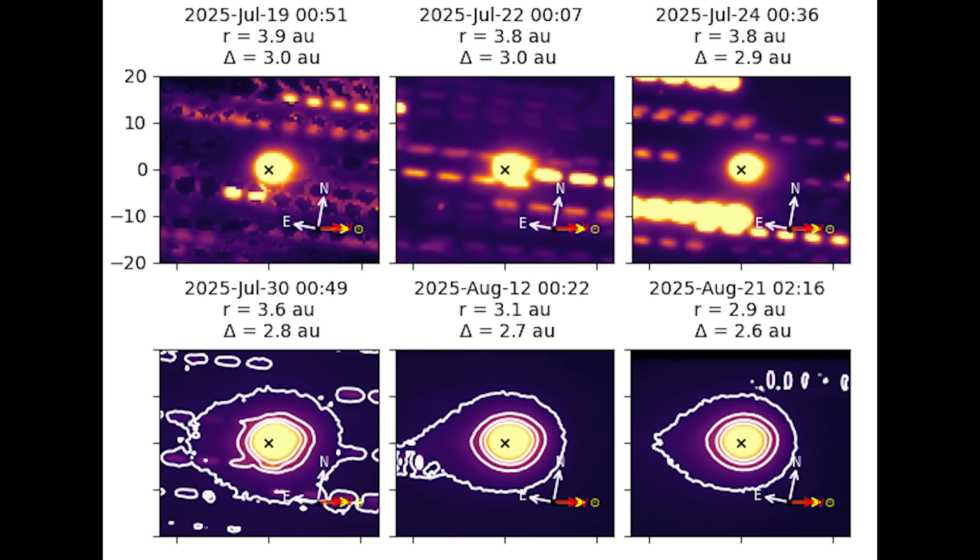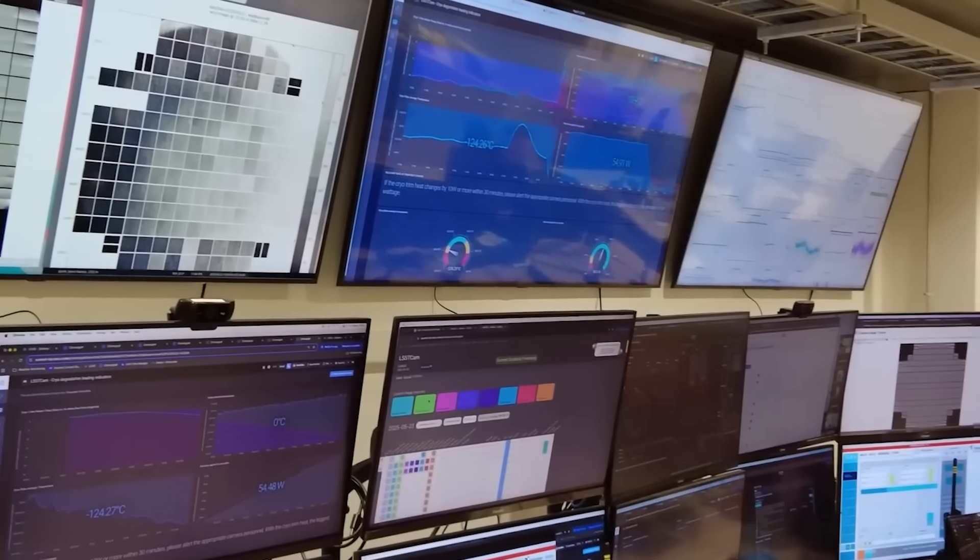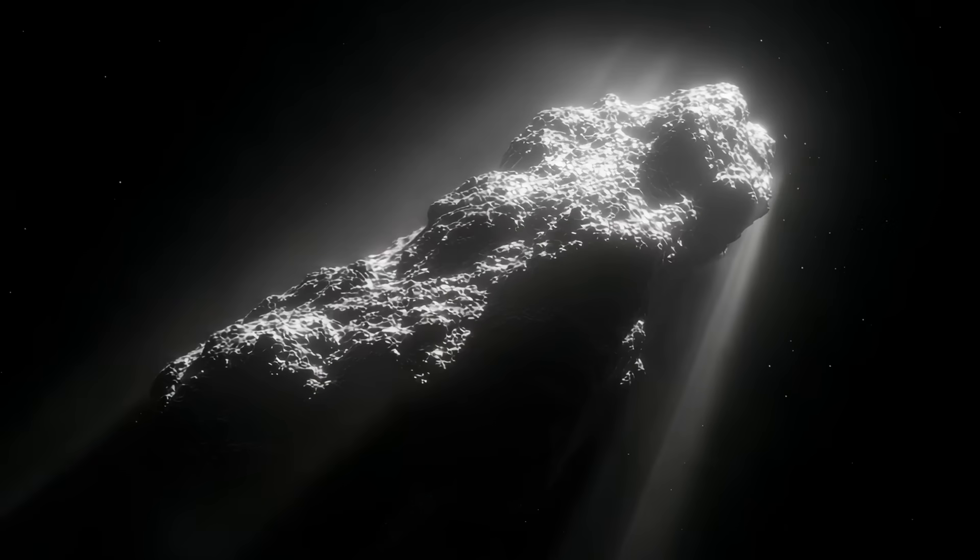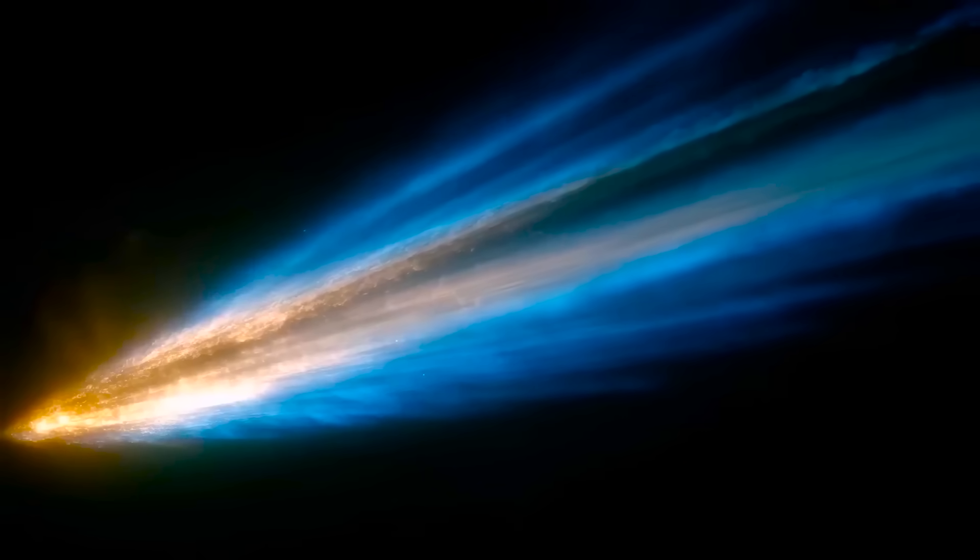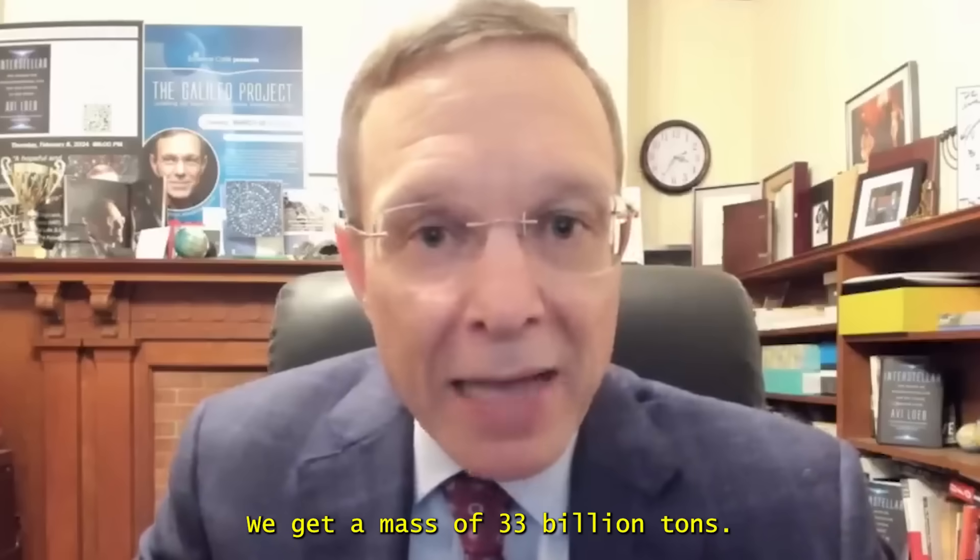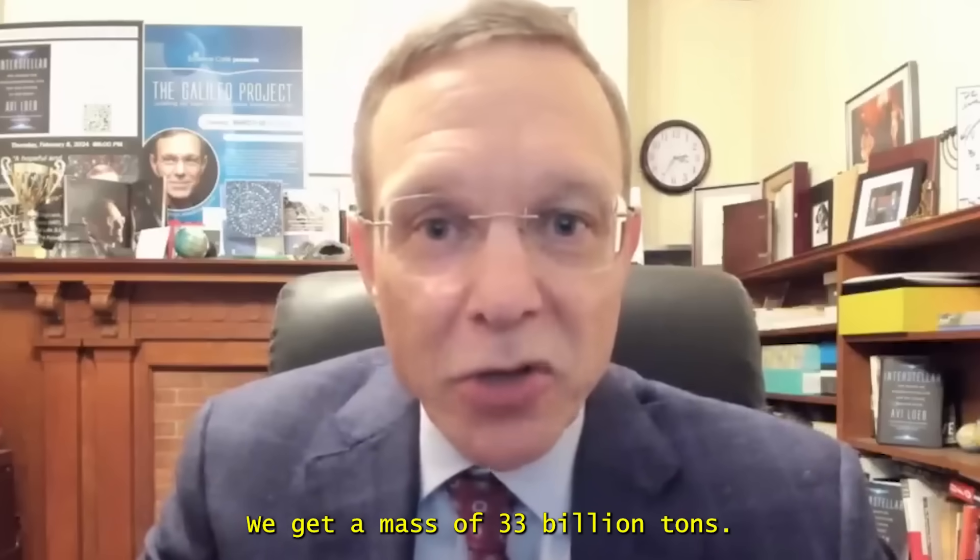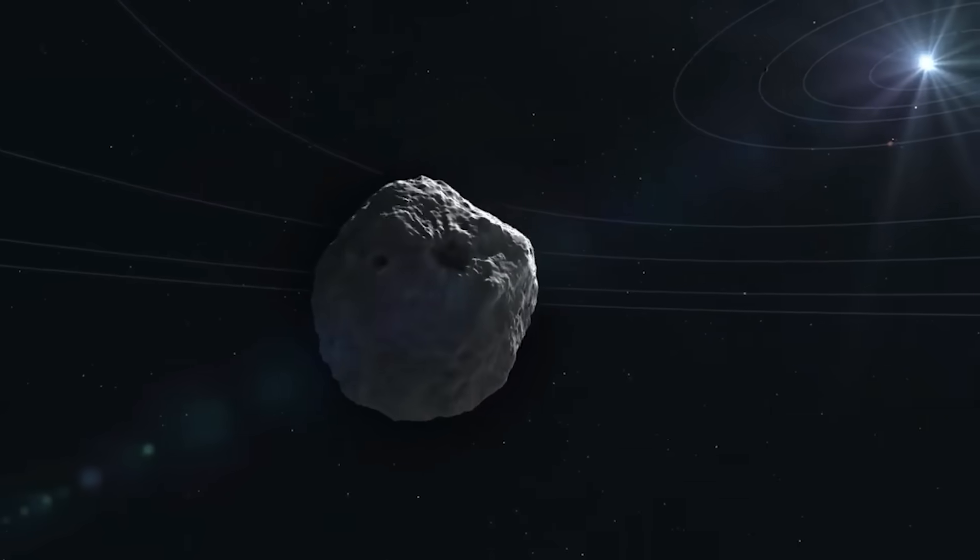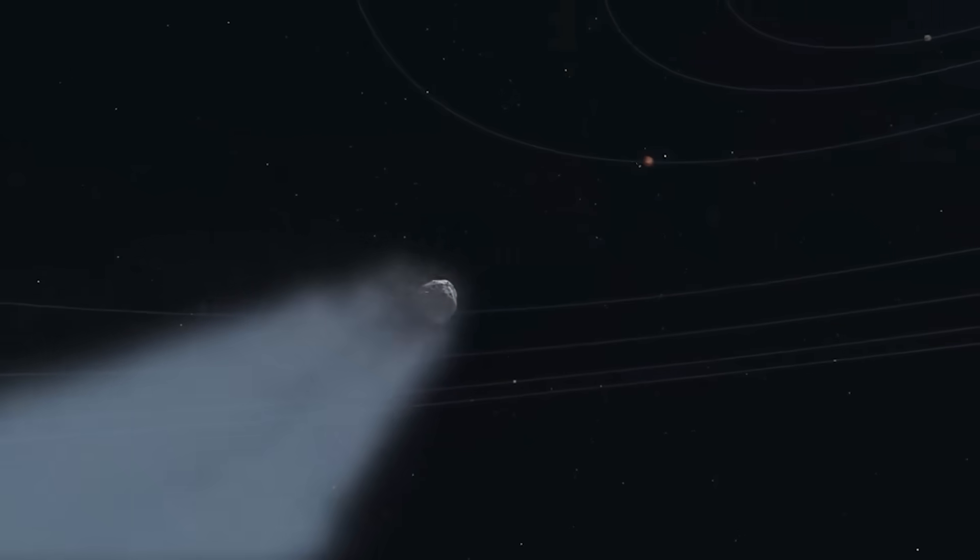Picture launching a dart from another galaxy and threading it through a keyhole the diameter of a dinner plate. The object's characteristics defied established categories. Scientists estimated nucleus size between 320 meters and 5.6 kilometers, anywhere from a football stadium to a small mountain range. Despite venting material and releasing dust, it showed virtually no tumbling, no thrust-induced trajectory shifts typical of outgassing bodies. Mass calculations suggest 33 billion tons minimum.